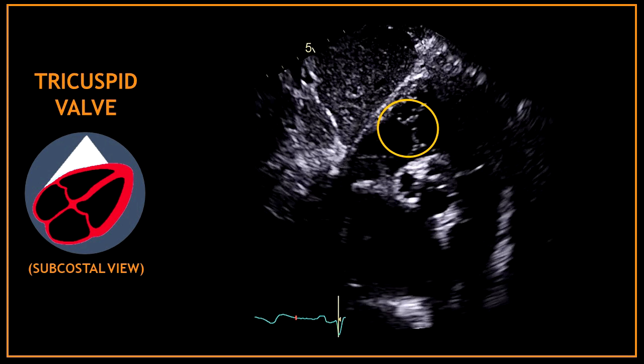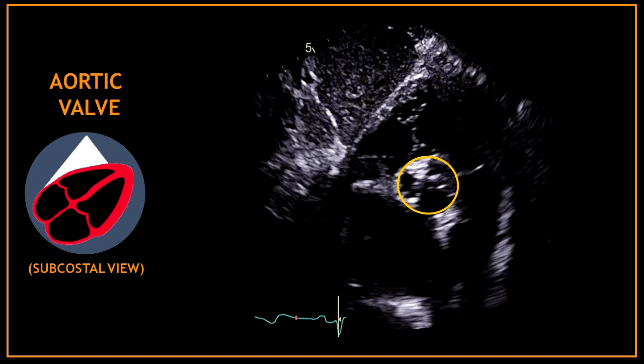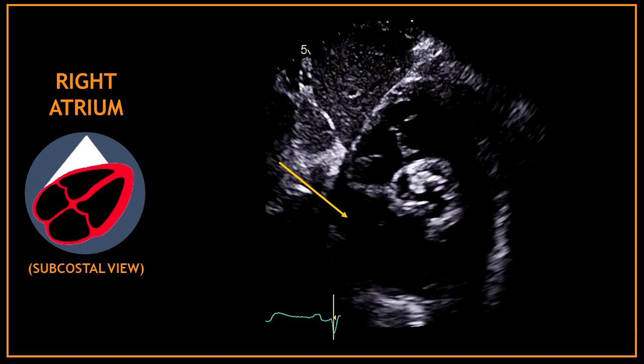The tricuspid valve is also easily visualized in this view, together with the aortic valve in the middle of the screen. Under the tricuspid valve we have the right atrium. Under the aortic valve we have the left atrium. Between both atria you can assess the inter-atrial septum.